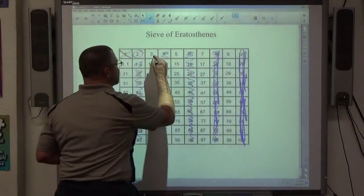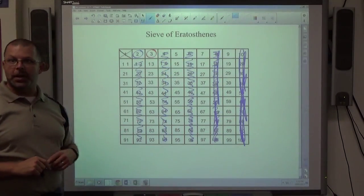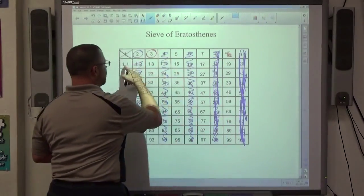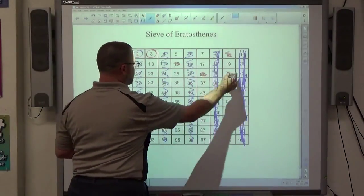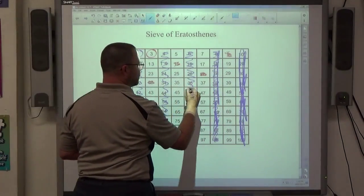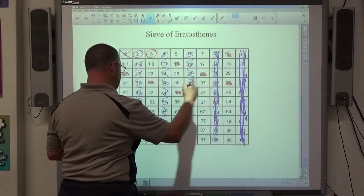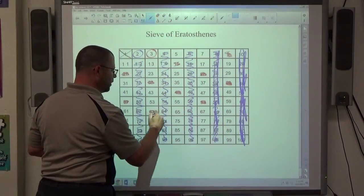The next number on the list is 3. And if I strike out every multiple of 3 counting by 3's, we got 3, 6 already gone, 9, 12's already gone, 15, 18's already gone, 21, 24 is gone, 27, 30, 33, 36, 39, 42, 45, 48, 51, 54, 57, 60, 63, 66, 69, 72, 75.